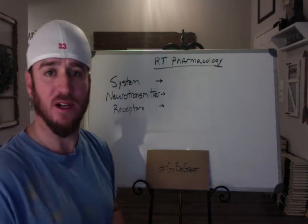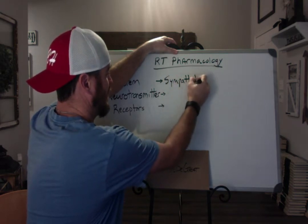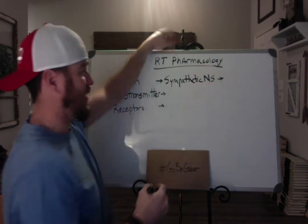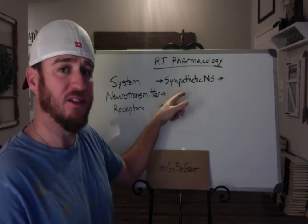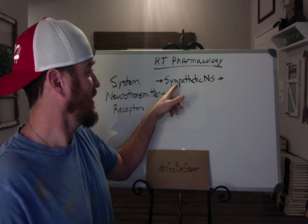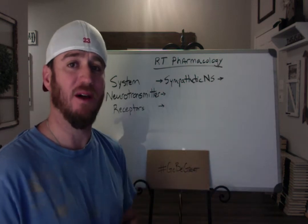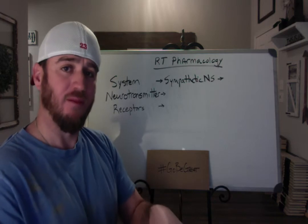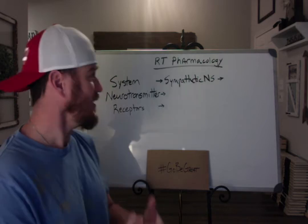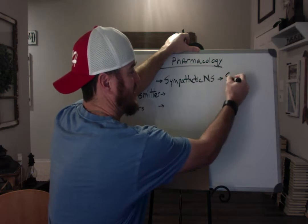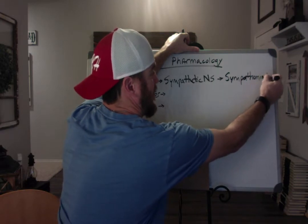The first system we're going to talk about is the sympathetic nervous system. If we give a drug that wants to create the same effect that the sympathetic nervous system does, then we would give a sympathomimetic — we're going to mimic it. If you think about it as sympathomimetic and remember the word 'mimic,' it will help you. The classification of these drugs is sympathomimetics.